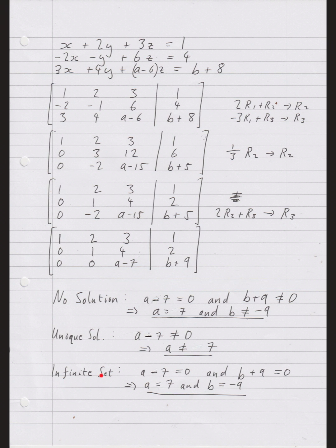When do we get the infinite set of solutions? First, a must be seven — otherwise we'd have a unique solution. We had no solution if a was seven and b was not minus nine, so for an infinite set we need a row of all zeros. That means a minus seven equals zero and b plus nine equals zero, so a is seven and b is minus nine. Those are the three cases.